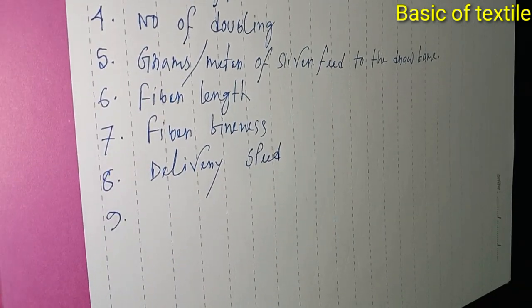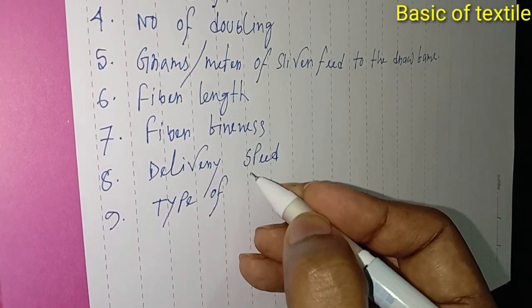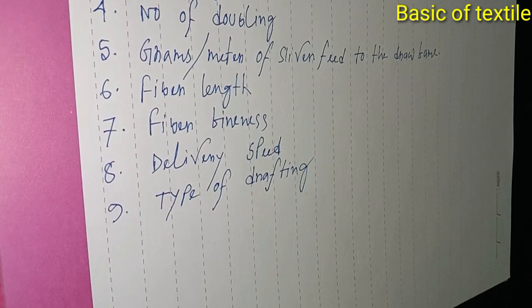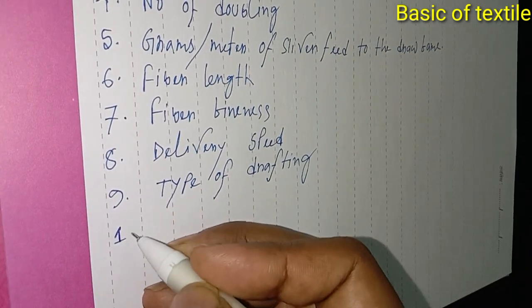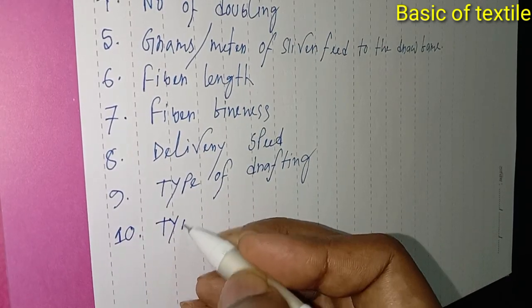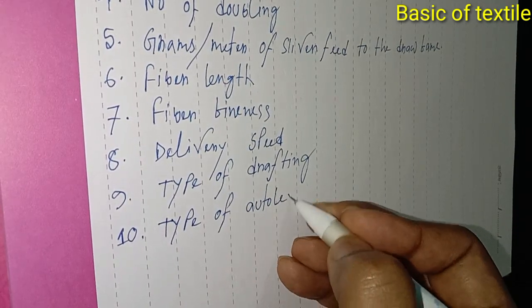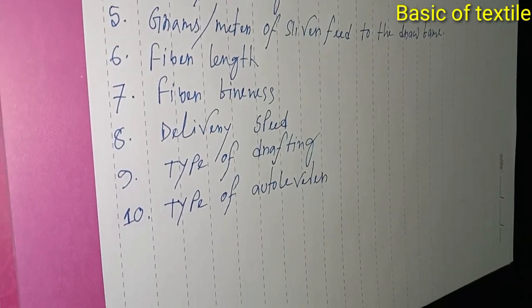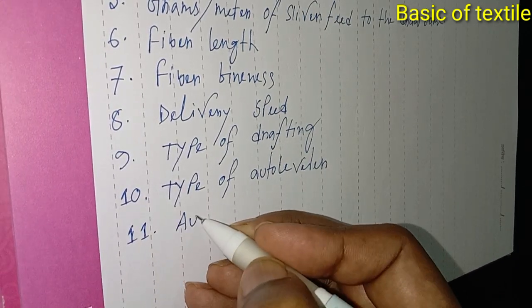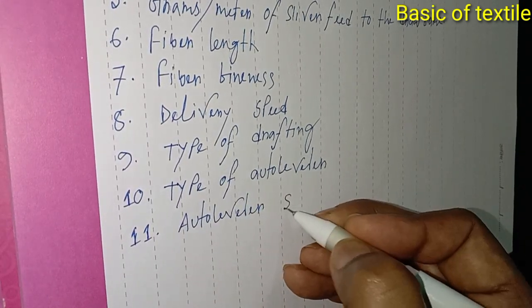Number nine: type of drafting. Number ten: type of auto leveler and auto leveler setting.